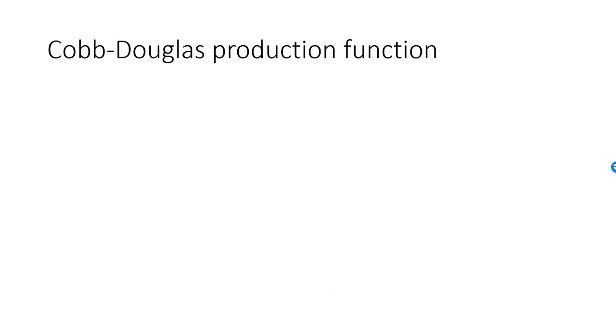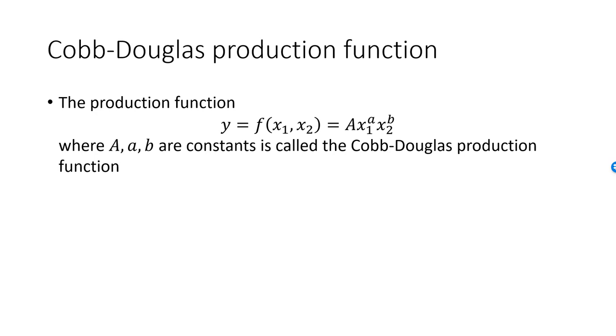The most common production function in microeconomics is the Cobb-Douglas production function. If we have a production function given by y equals capital A times x1 raised to a times x2 raised to b, where capital A, a, and b are all strictly positive constants, then this is a Cobb-Douglas production function.